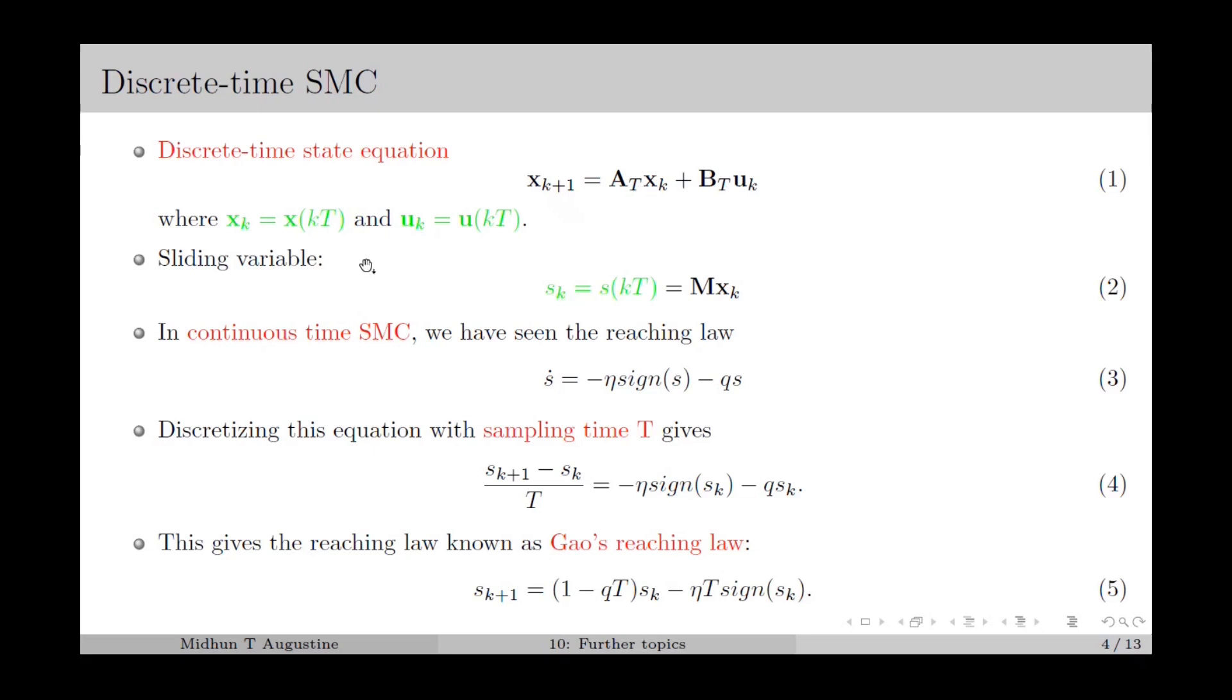We define the sliding variable in discrete time as in equation 2, where s_k denotes s(kT), and M is the parameter matrix.